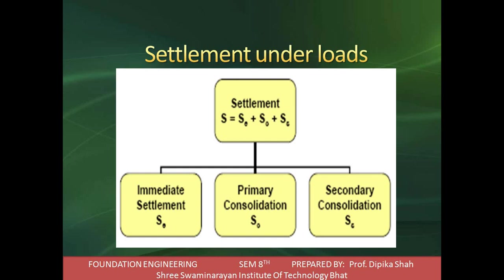In immediate settlement, when a partially saturated soil mass is subjected to external loads, a decrease in volume occurs due to expulsion and compression of air in the voids. A small decrease in volume also occurs due to compression of soil particles. The volume decrease of the soil mass due to compression of solid particles is known as immediate settlement.